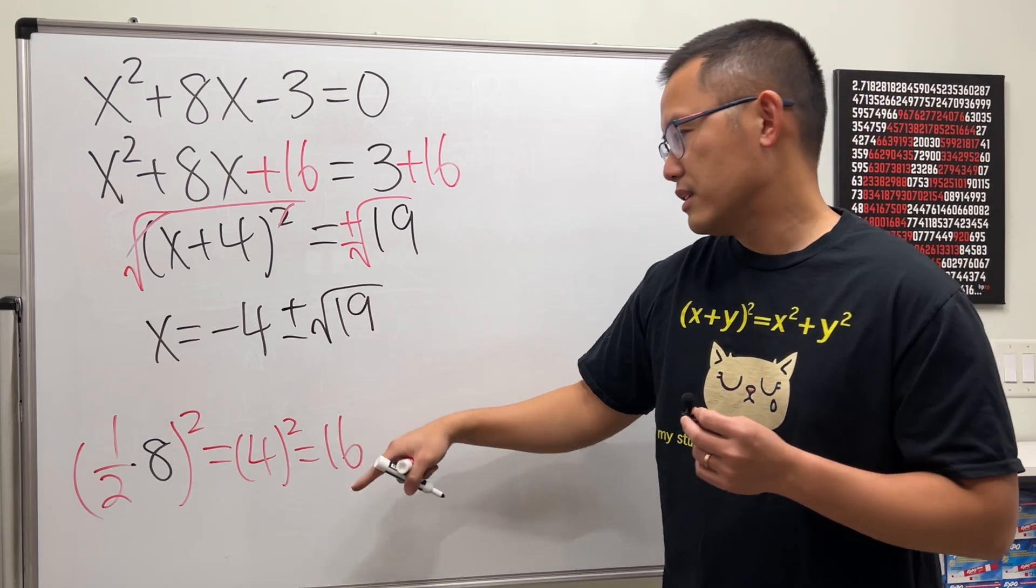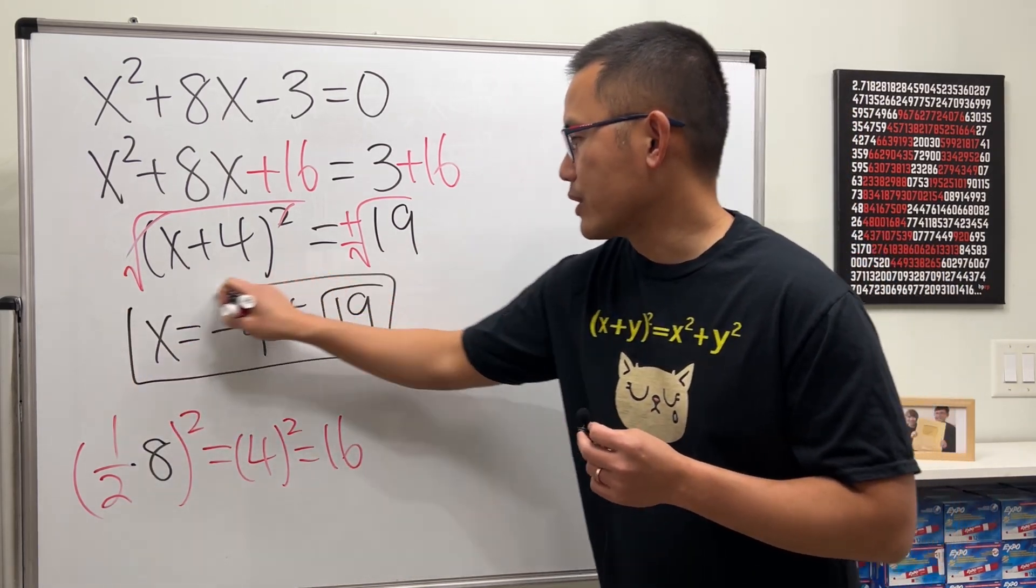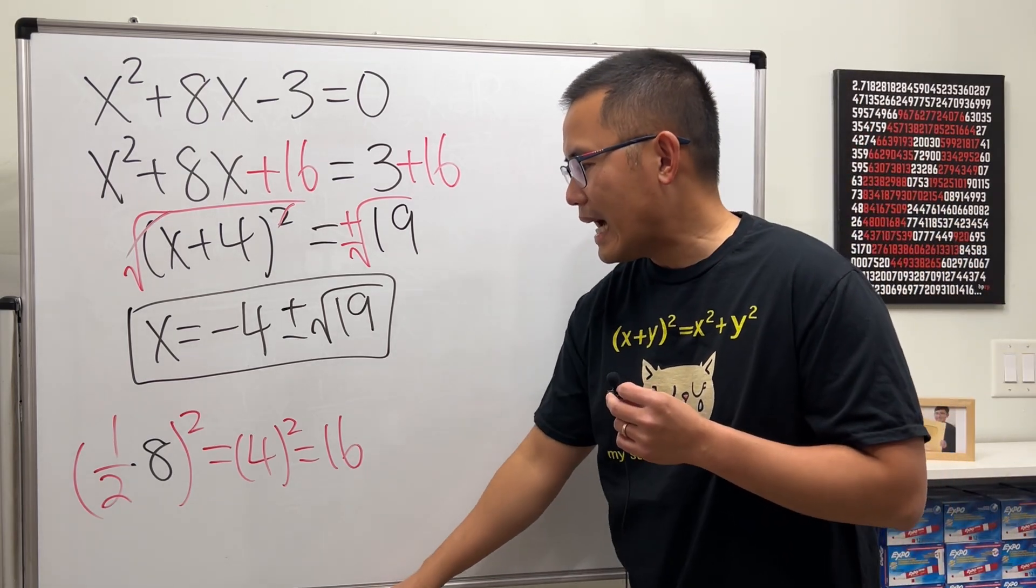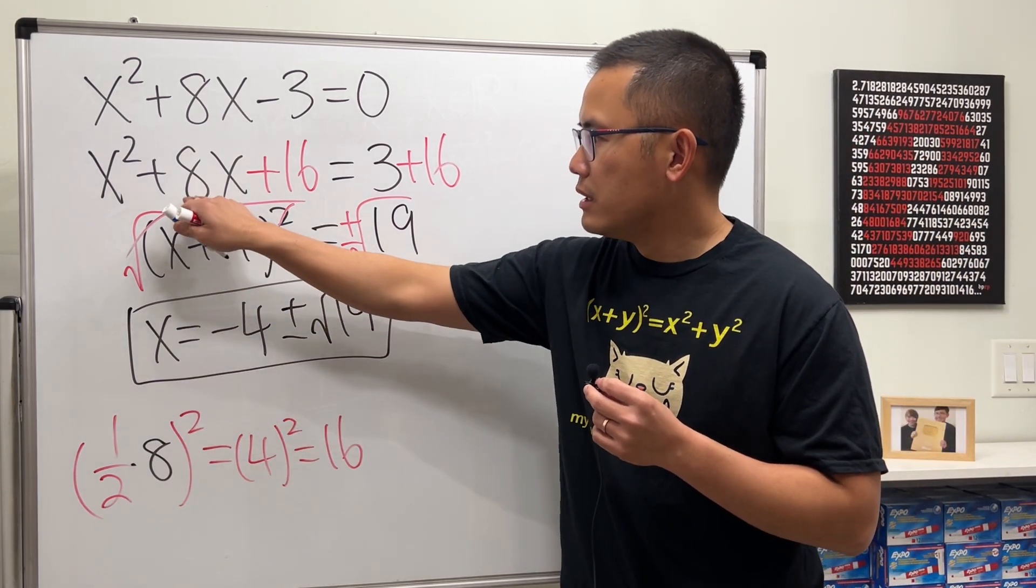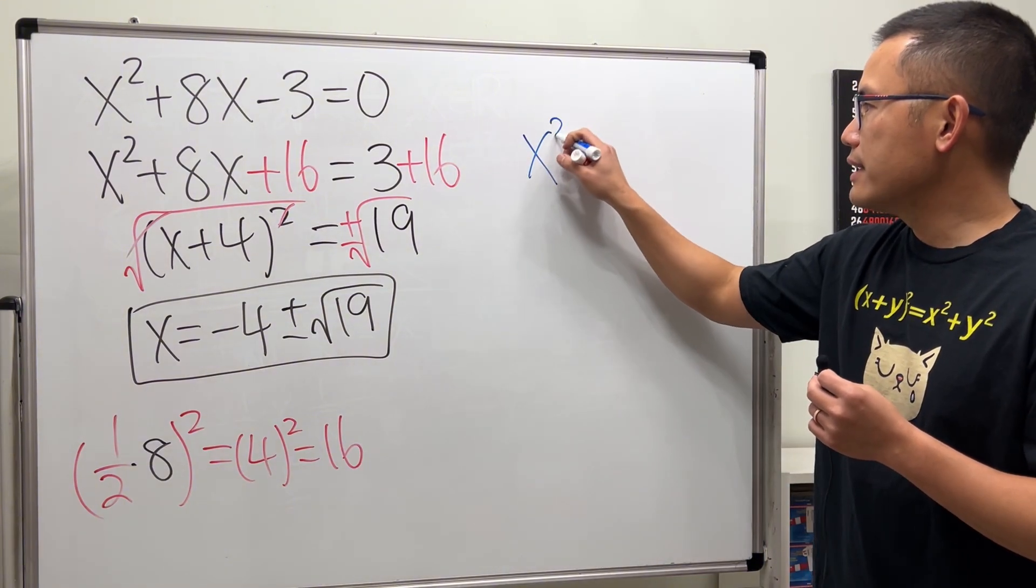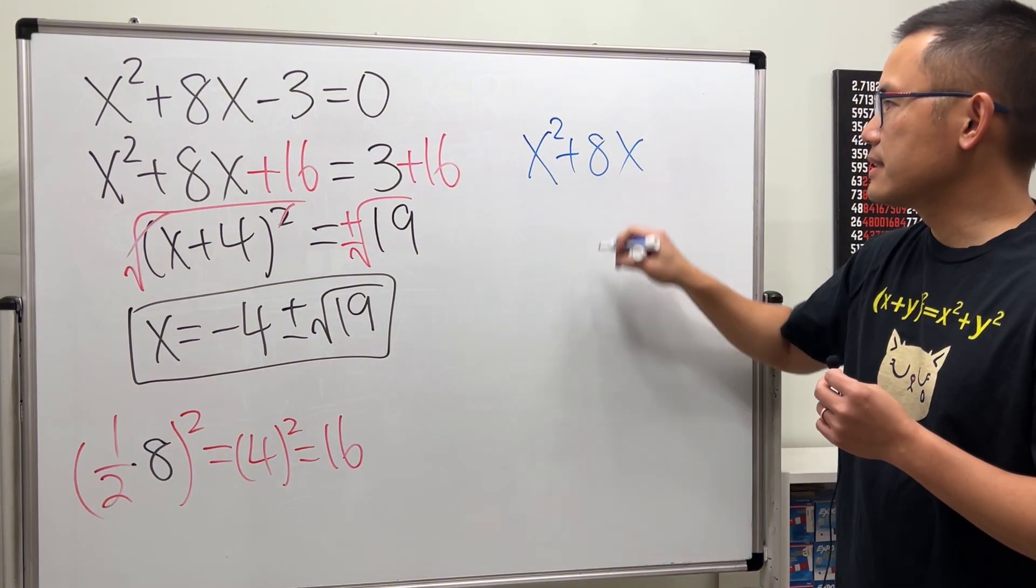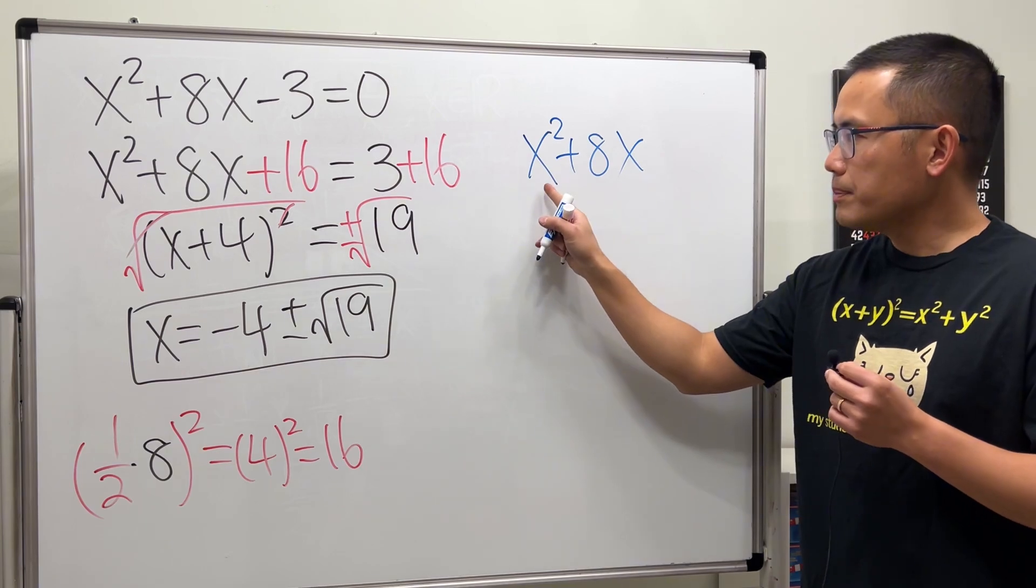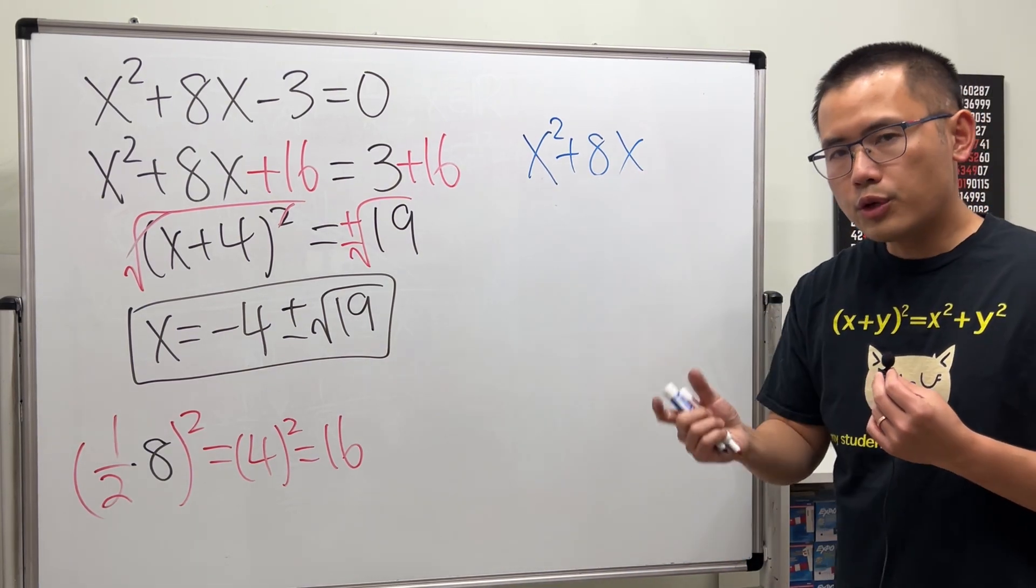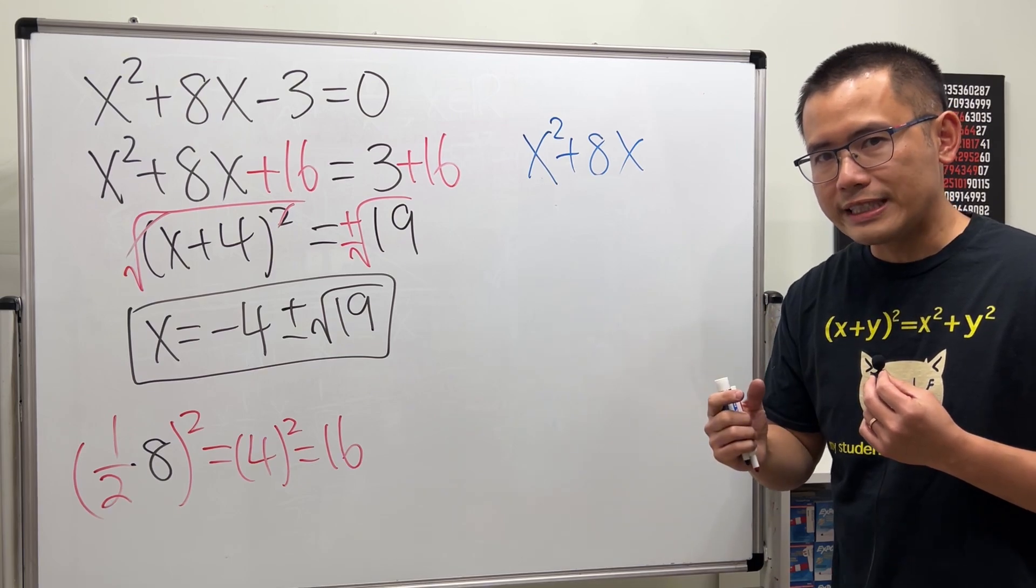You can just leave the answer like this and then we're done. Now let me talk about why we add one-half of this value to both sides. Here we have x² + 8x. Let's talk about what x² represents geometrically. x² literally means a square with each side being equal to x.